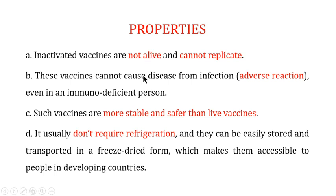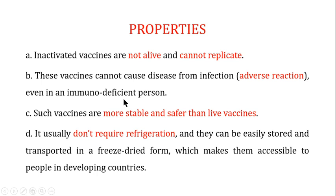The second important property of the killed vaccine is that these vaccines cannot cause disease from infection. Because of this, they can be given even to immunodeficient persons. Live vaccines are not suitable for immunodeficient persons because they are alive and can reproduce. Killed vaccines can safely be given to immunodeficient patients because they cannot cause disease in them.